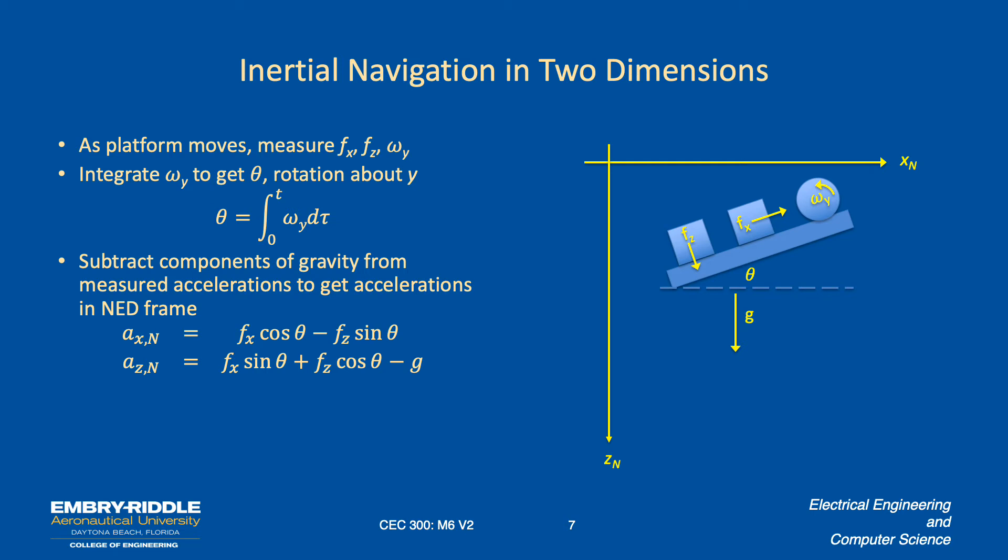So we have to find the components in the NED frame, basically using trig as we've done before. And that's just our body to NED calculation there. So cos of theta minus sin of theta. And then to go to the Z direction, the down direction of NED, sin of theta and cos of theta, each times F_X and F_Z. And then in the Z direction, we have to subtract off the gravity vector.